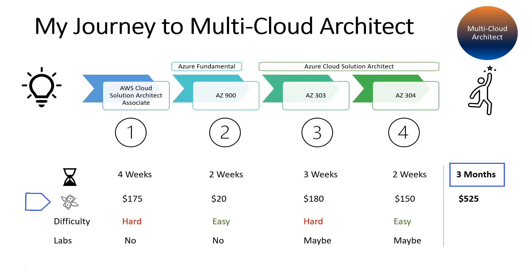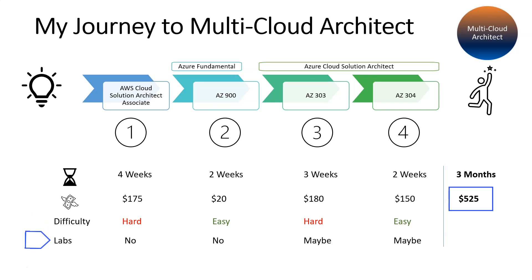For AZ-304, since there is a lot of overlap, you need less preparation material. The total cost to become a multi-cloud architect is $525 and three months of time. Difficulty levels: AWS Cloud Solution Architect Associate is hard, AZ-900 is easy, AZ-303 is hard, and AZ-304 is easy. There are no labs in the AWS exam, and for Azure exams there are likely no labs currently, though that could change. Based on my experience, it is definitely worth spending three months and around $500 — multi-cloud architects are in demand and it helps you think across vendors and understand what each cloud does best.